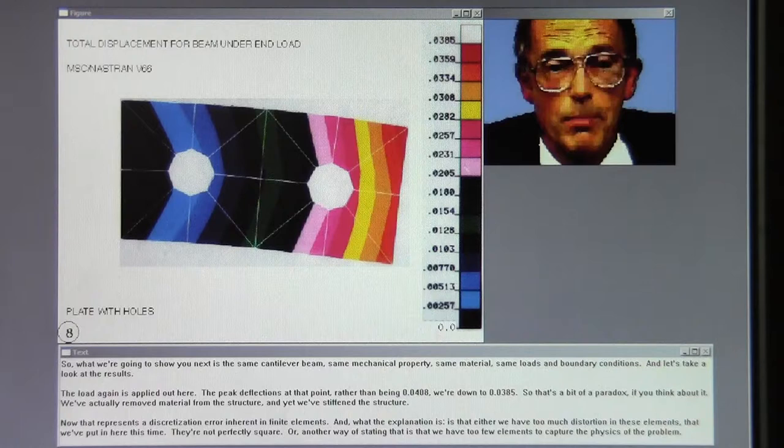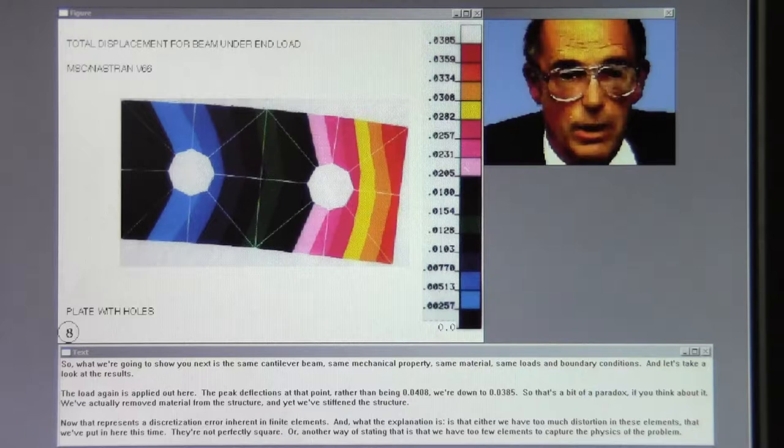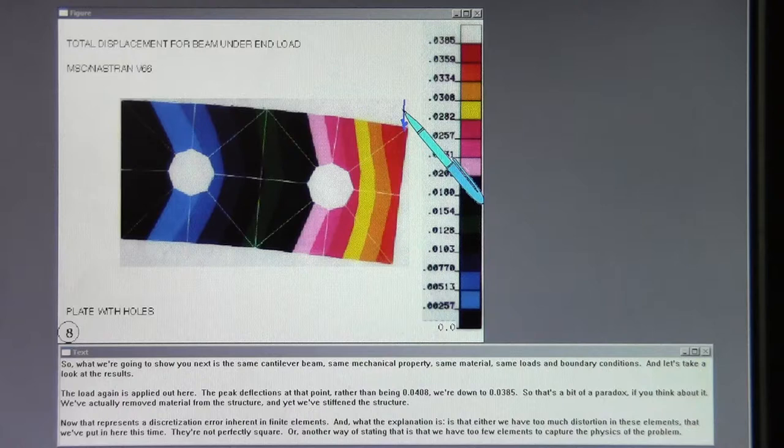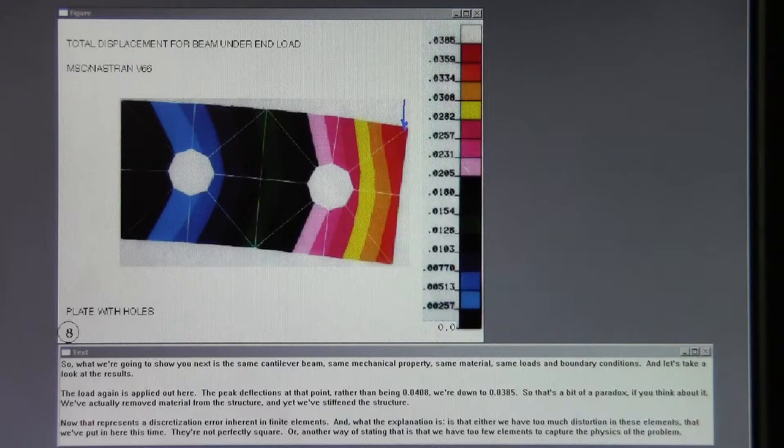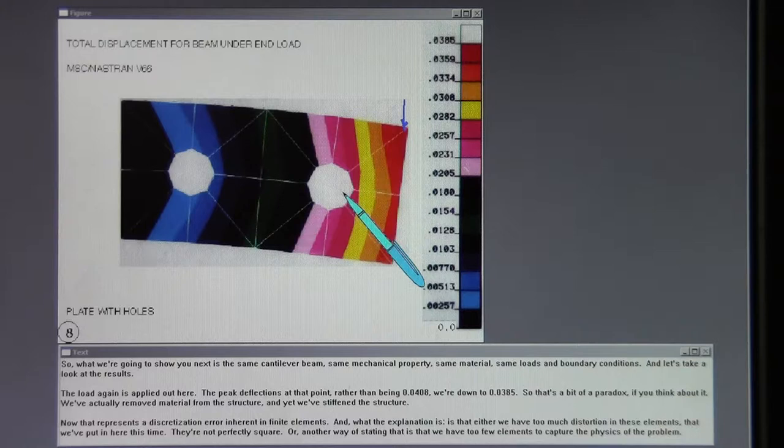So what we're going to show you next is the same cantilever beam, same mechanical properties, same material, same loads and boundary conditions, and let's take a look at the results. The load again is applied out here, the peak deflections at that point. Rather than being .0408, we're down to .0385. So that's a bit of a paradox if you think about it. We've actually removed material from the structure, and yet we've stiffened the structure.